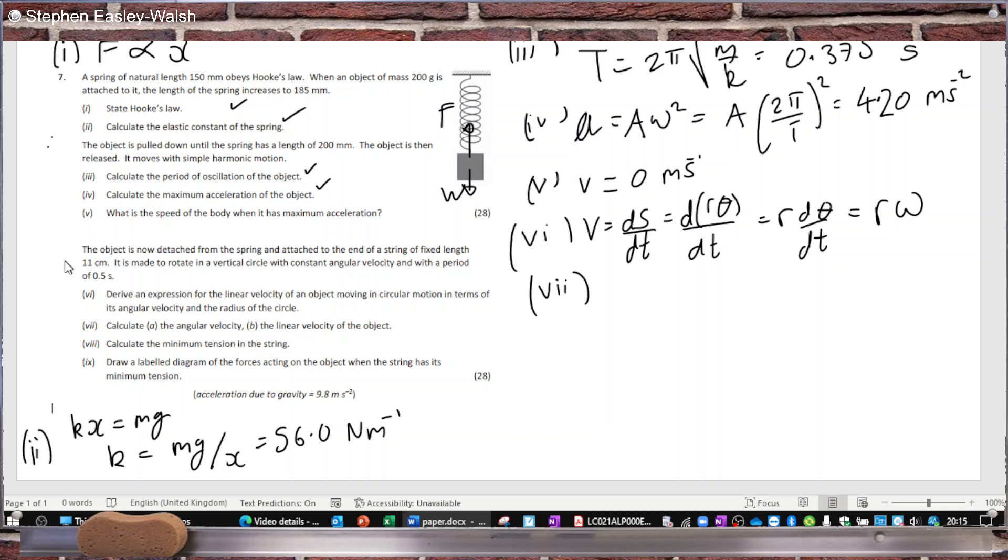Part 7: Calculate the angular velocity when it's rotating in this vertical circle. Omega is 2π over T, and this time T is half a second, so that's 12.6 radians per second.